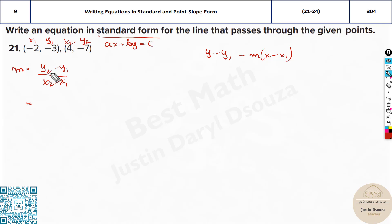Now let's solve the m value first. Y2 is minus 7 minus of minus 3 divided by x2 is 4 minus of minus 2. The answer would be minus 7 plus 3 divided by 4 plus 2. When you solve this it will be minus 4 divided by 6, which is negative 2 thirds. That is the slope.